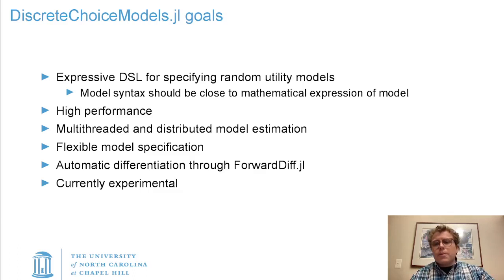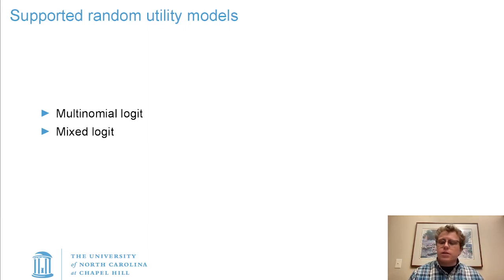I should note that the package is currently pretty experimental. I implemented multinomial logit a while ago. Mixed logit is still very new, but on either of them I'd be interested to hear folks' feedback. So right now the package supports multinomial logit and mixed logit models. I also want to support nested logit because I'm in transportation and that's a model that's used a lot there as well.